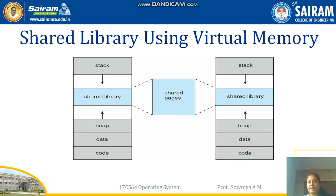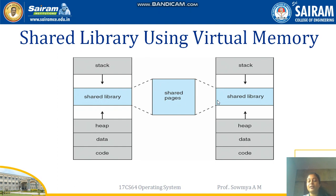Next is shared libraries using virtual memory. All processes can share some data — many processes can share shared pages or shared data for execution. In the free memory we have shared libraries. If we consider two processes — process one and process two — sharing the same shared page, the shared library has an index to those shared pages. Each process also has an address space in the free space pointing to the shared pages. This is how virtual memory for shared libraries looks.